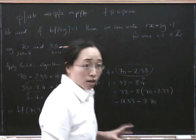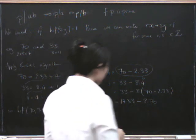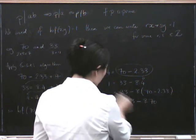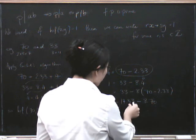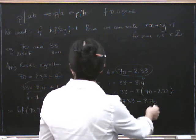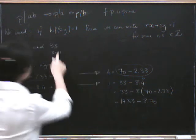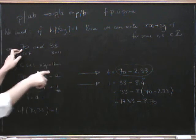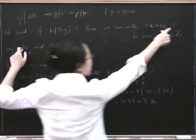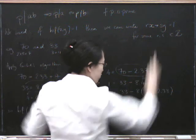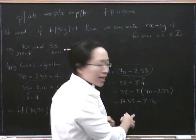And so that, hopefully I've done it right, is an expression of 1 as a number of 33s and a number of 70s. And that's what we were trying to get, right? We started with 70 and 33, and we said we can express 1 as some number of 70s and some number of 33s. And we've done it here.